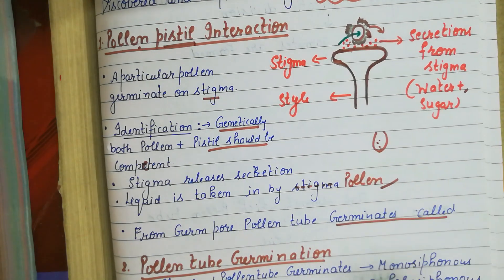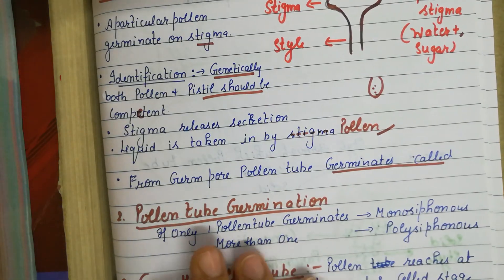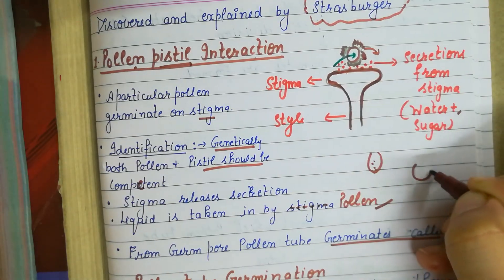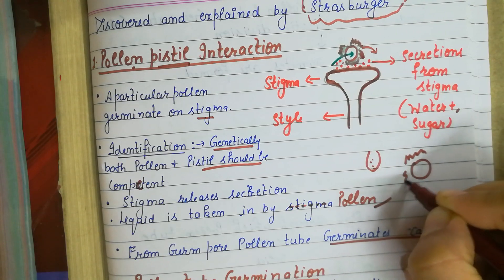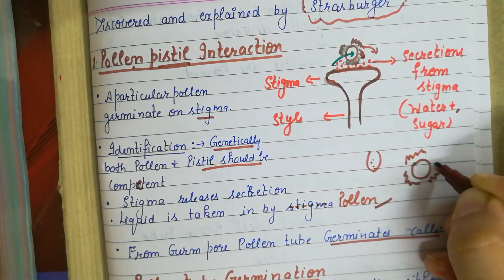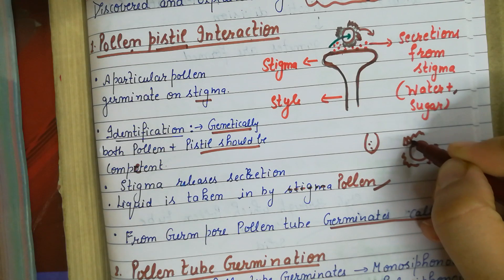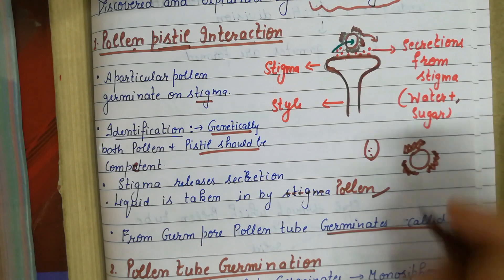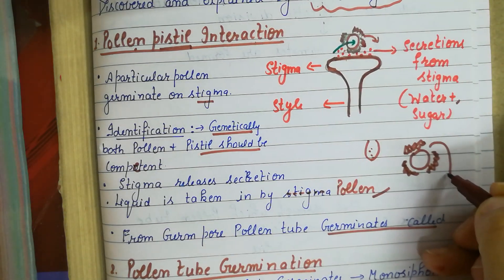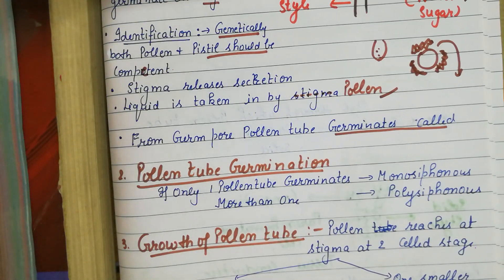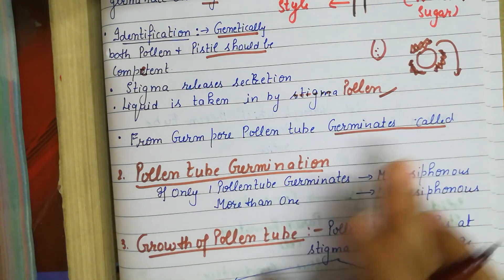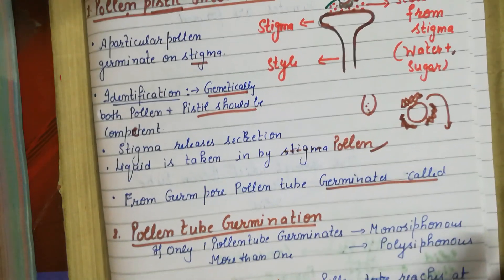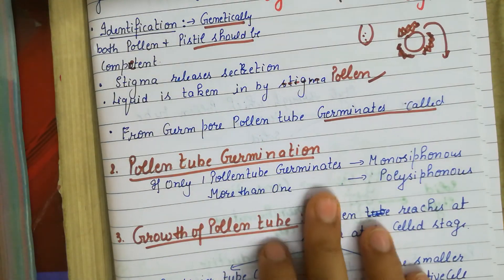From the germ pore, the pollen tube germinates, and this is called our second step — pollen tube germination. The pollen has a highly resistant exine on the outside and intine on the inside, with a few gaps called the germ pore. From this germ pore the pollen tube germinates. So the second step after pollen-pistil interaction is pollen tube germination.